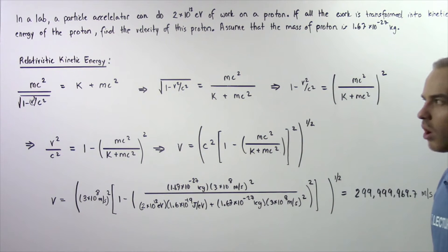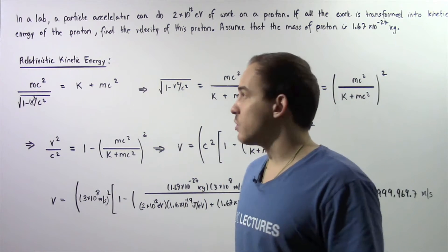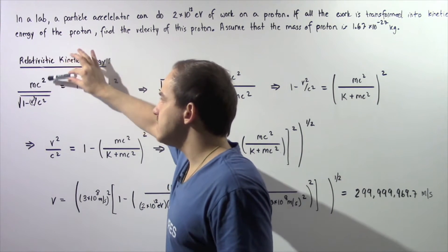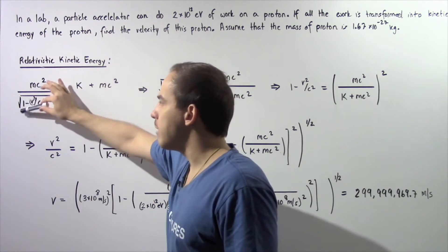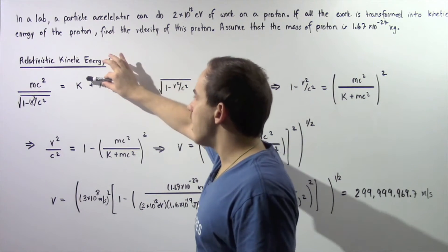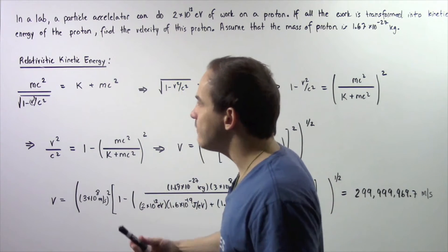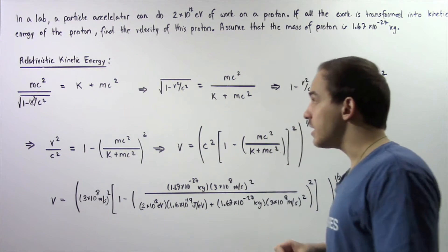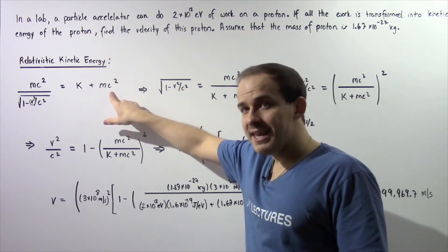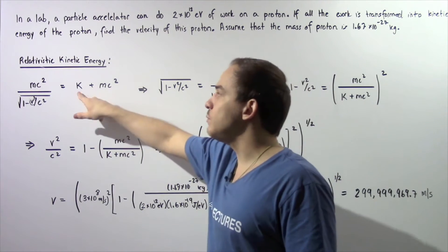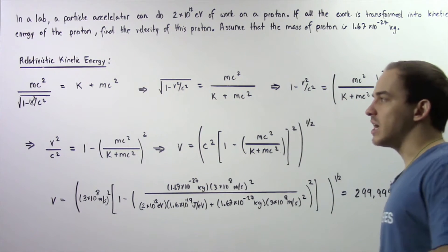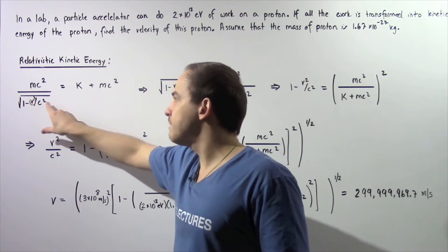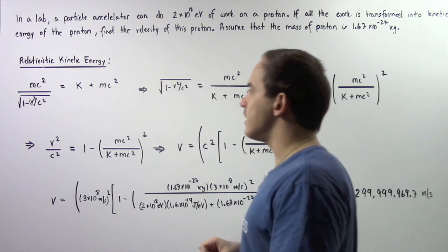Let's begin by recalling the relativistic kinetic energy of our particle, given by this equation. The total energy of the proton — mc squared divided by the square root of 1 minus v squared divided by c squared — is equal to the sum of the kinetic energy of the proton given in joules and the rest mass energy of the proton, mc squared. We know the mass, we know c (the speed of light in a vacuum), and we know k (the kinetic energy of that proton). All we have to do is solve for the velocity term found in the denominator on the left side of our equation.